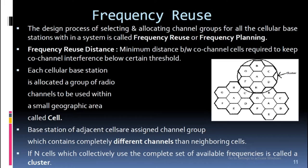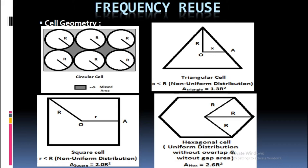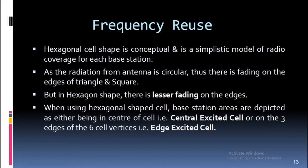Frequency reuse: The design process of selecting and allocating channel groups for all cellular base stations within a system is called frequency reuse or frequency planning. Frequency reuse distance is the minimum distance between co-channel cells required to keep co-channel interference below a certain threshold. Each cellular base station is allocated a group of radio channels to be used within a small geographic area called a cell. Base stations of adjacent cells share assigned channel groups which contain completely different channels than neighboring cells. If N cells collectively use the complete set of available frequencies, that group is called a cluster.